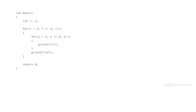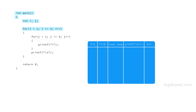Let's see how to write this in C. We have the main function and two integer variables i and j are declared. We have the outer for loop: for i equal to one, i less than or equal to five, i plus plus — it will execute five times. Then we have the inner loop: for j equal to one, j less than or equal to five, j plus plus — which will also execute five times, and each time it will print a star.